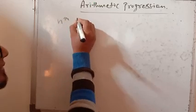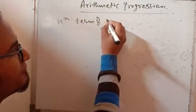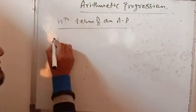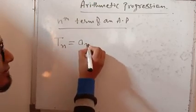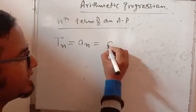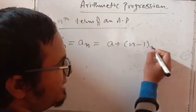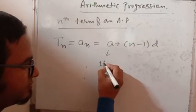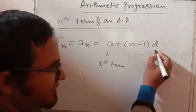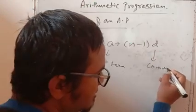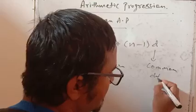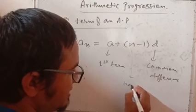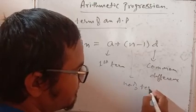Now you see, nth term of an AP. Now I am writing the general formula. You can write term TN or AN also. This equals to A plus N minus 1 into D. This is the formula. So this A is first term, and this D is common difference, and this N is number of terms.